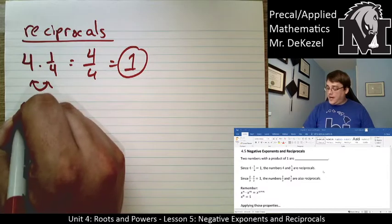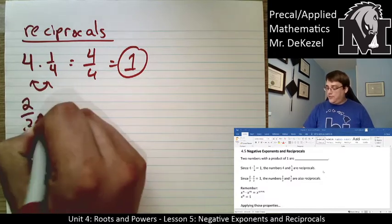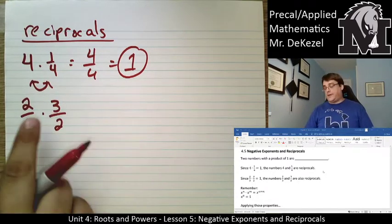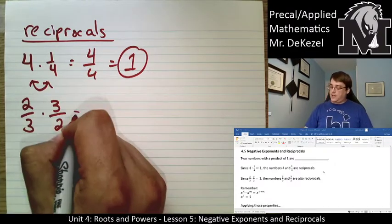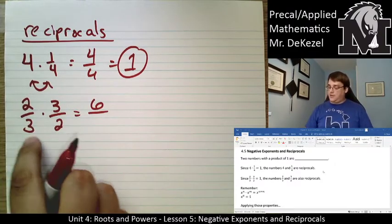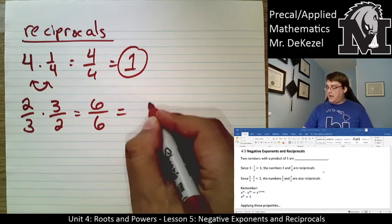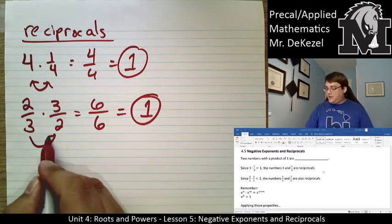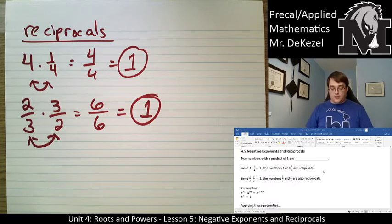If we have two over three multiplied by three over two, we multiply the top and the bottom. Two times three is six, and three times two is six — that also equals one. So these two numbers are reciprocals.